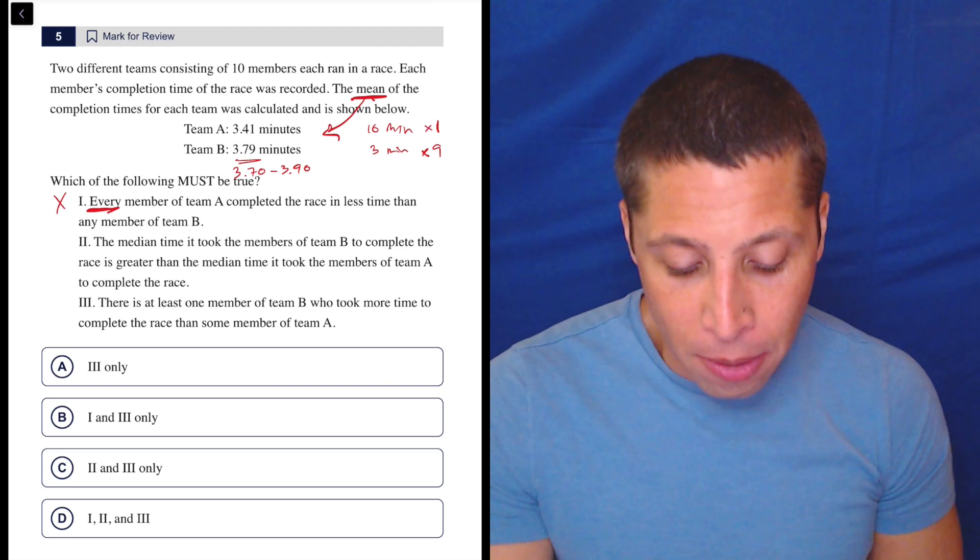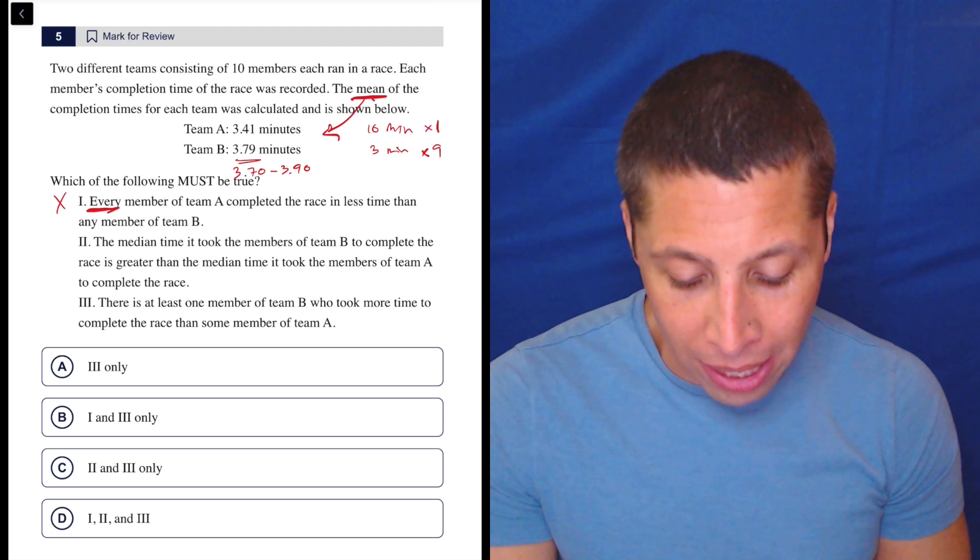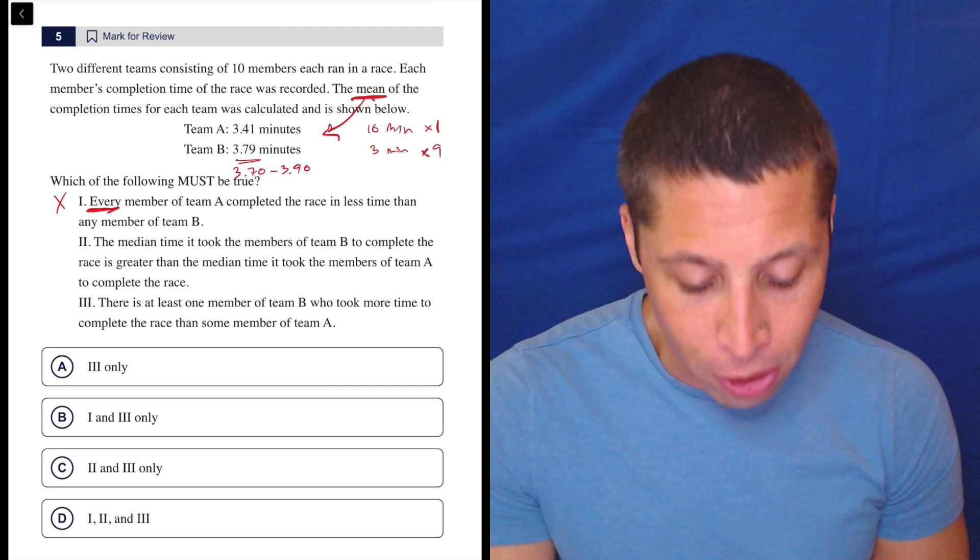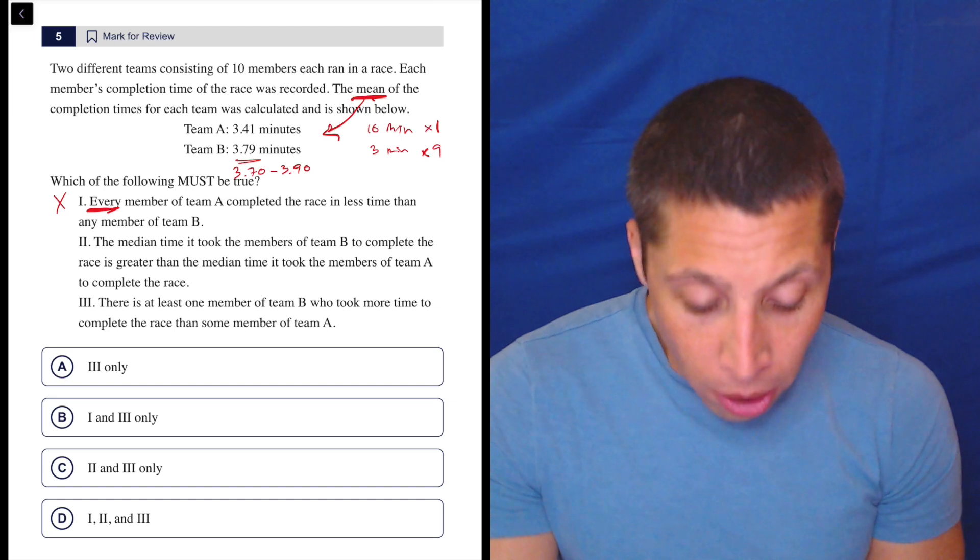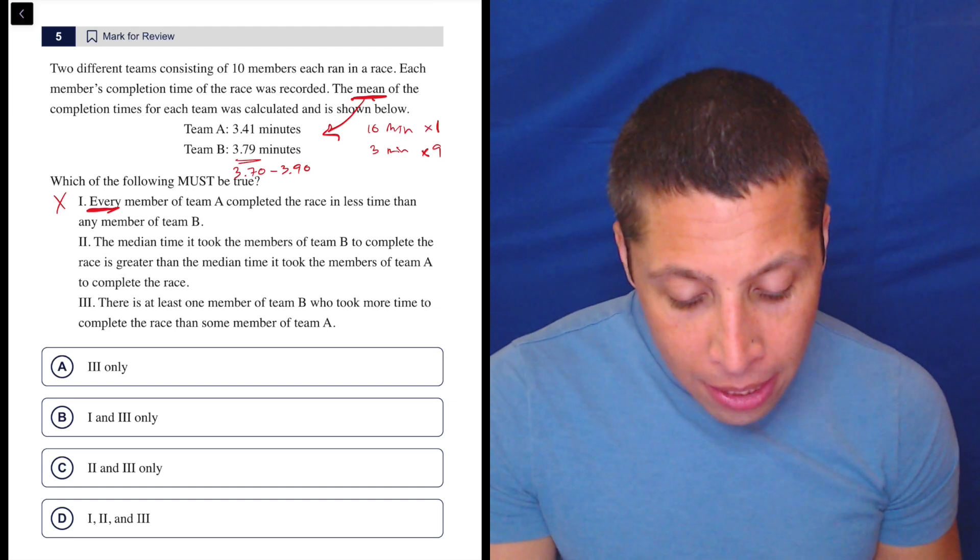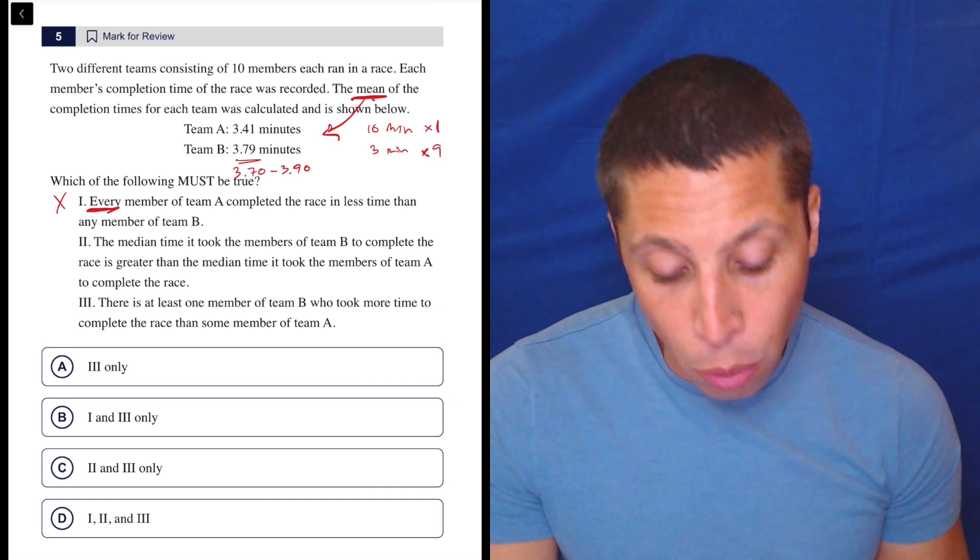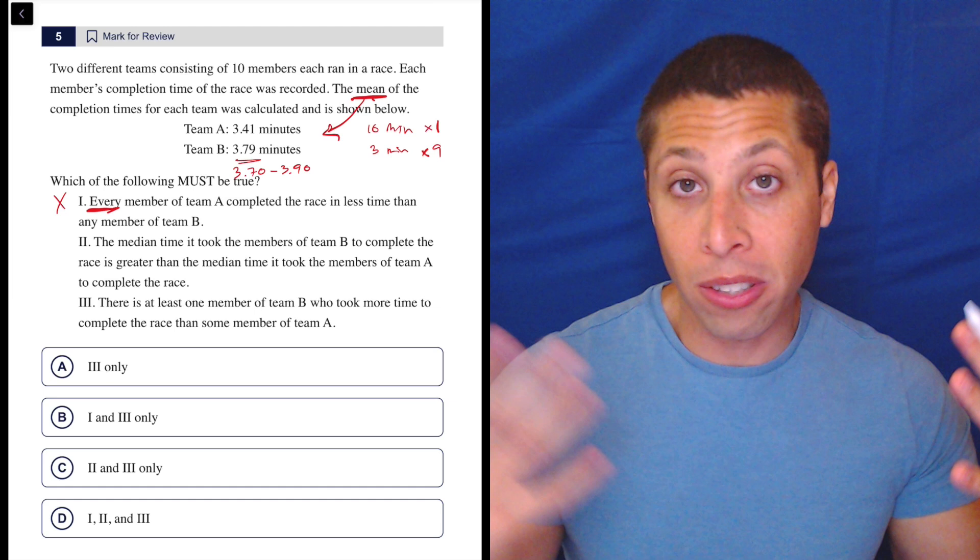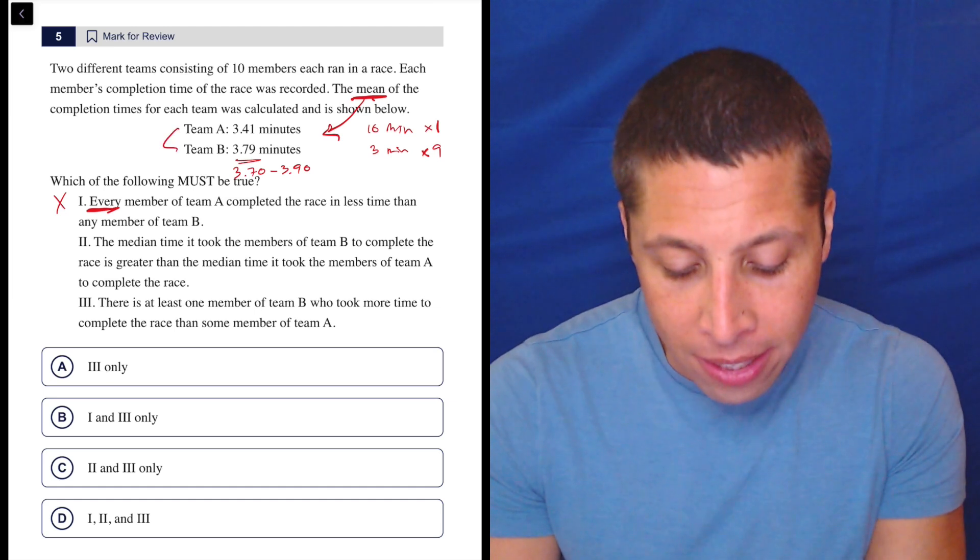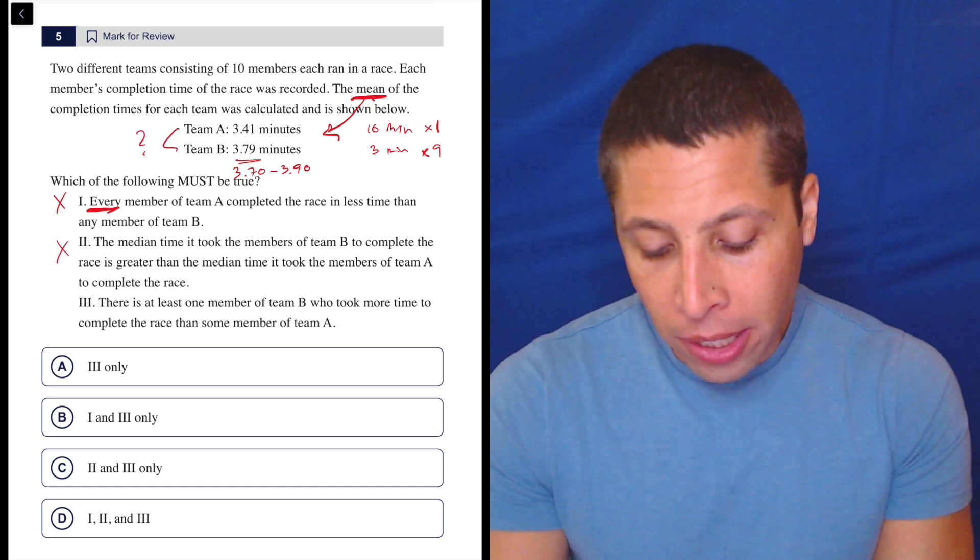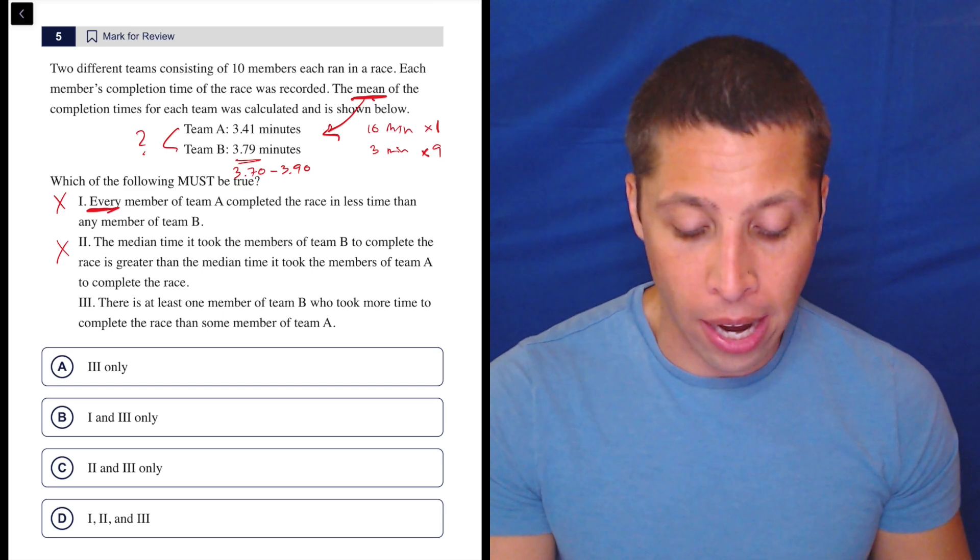Two: the median time it took the members of Team B to complete the race is greater than the median time it took the members of Team A to complete the race. Again, we just don't really know. The mean of Team B is going to be a weighted average, whereas the median is an absolute middle. We just don't know what went into either of these teams. So I'm going to get rid of two for kind of the same reason that I got rid of one.